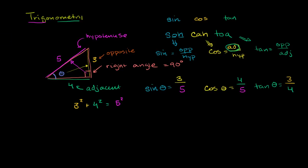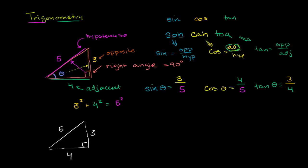Now let's think about another angle in this triangle. I'll redraw it since the diagram is getting messy. The exact same triangle has lengths 4, 3, and 5. Last time we used theta at the bottom angle, but now let's use the angle up here — I'll call it x.